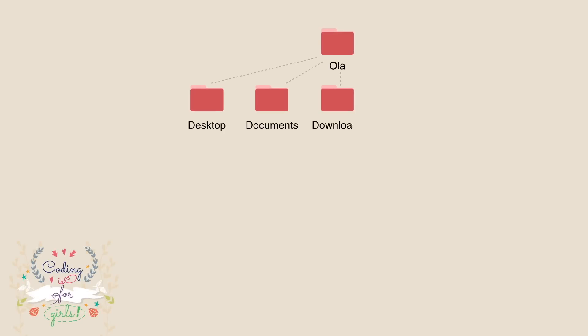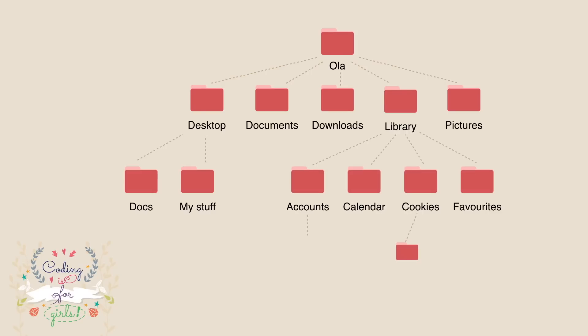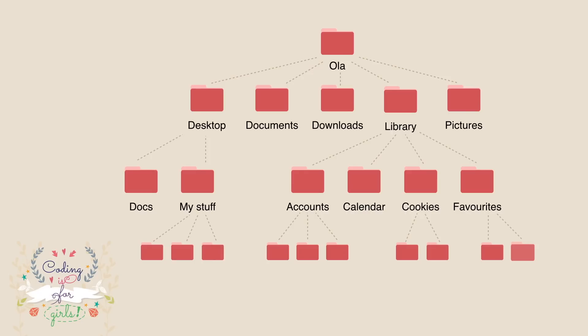The root directory has many subdirectories, and those subdirectories have other subdirectories, and so forth. Let's say we are in a directory named Ola. This directory contains Desktop, Documents, Downloads, Libraries, and Pictures. Then Desktop has folders Docs and My Stuff. The Library folder has Accounts, Calendars, Cookies, and Favorites. Then each of those folders has subfolders and files, and so on. It already looks like a tree, but upside down. So we already know what a tree is as a data structure.